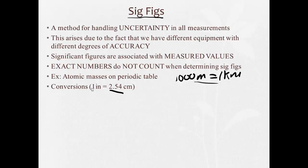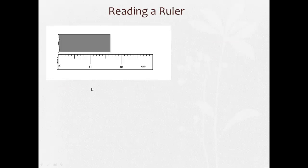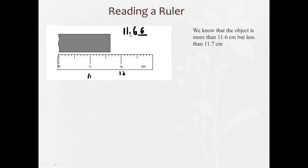Before getting into the rules, let's think about how significant figures work with measurement. When we read a ruler — say the marking is between 11 and 12 — we don't just say 11 or 12. We can count to 11.6, but we always have to estimate one more digit. So if it's between 0.6 and 0.7 and looks a little more than halfway, we'd read it as 11.66. We always estimate that last digit, and we know the object is more than 11.6 but less than 11.7.